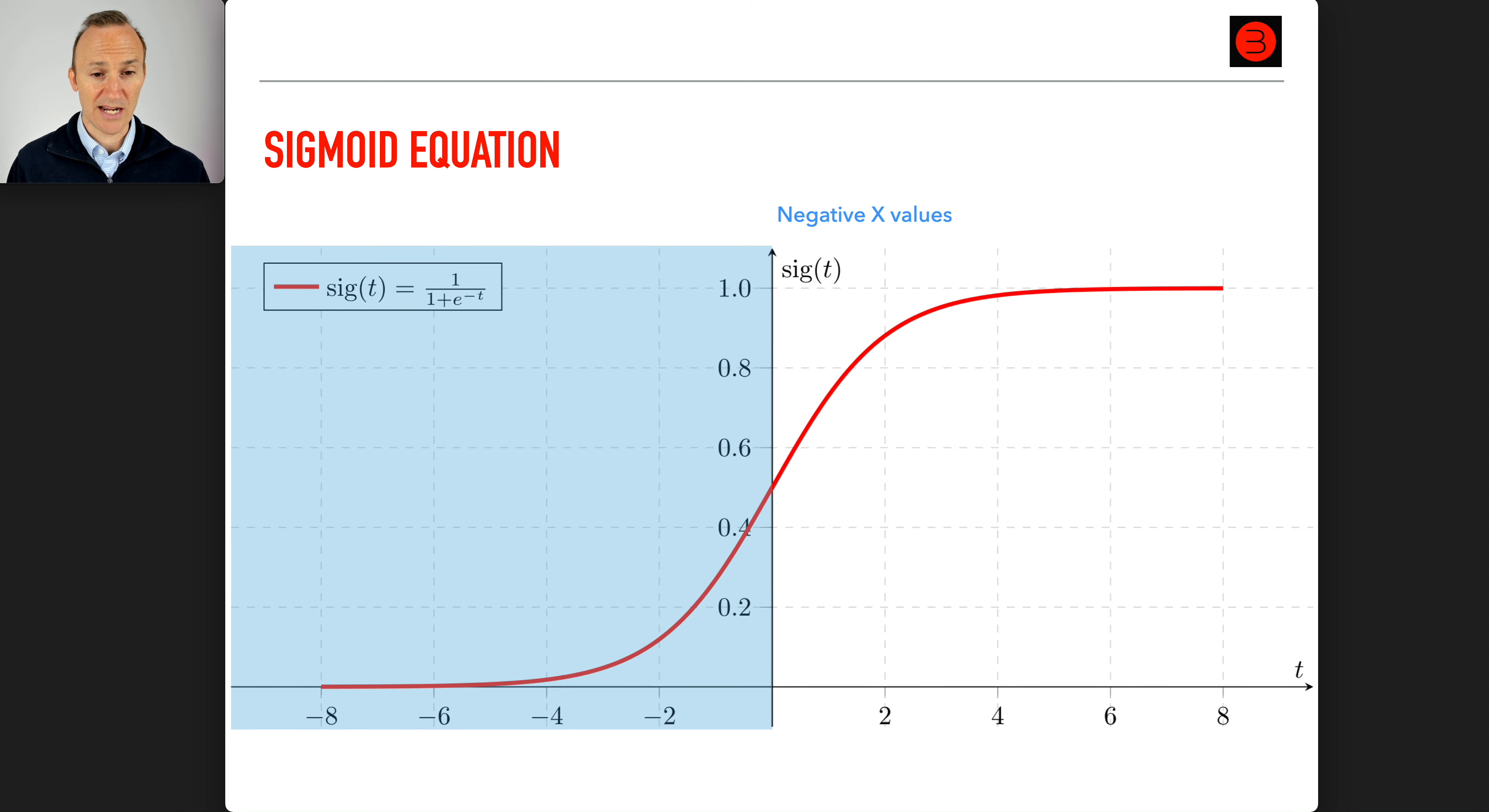Similarly, the negative x values are all mapped to class zero. Everything that's to the left of zero on the red curve in logistic regression maps to class zero. The sigmoid function is the curve logistic regression uses to map it to zero or one.